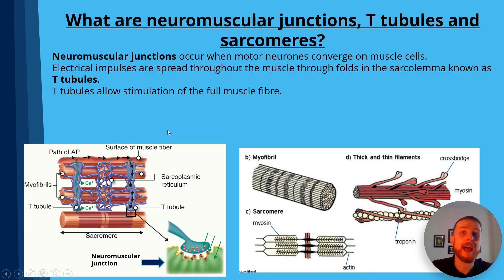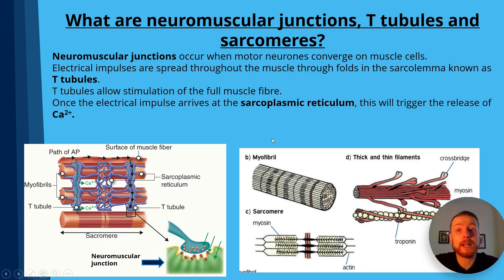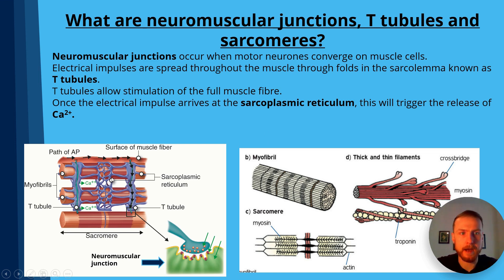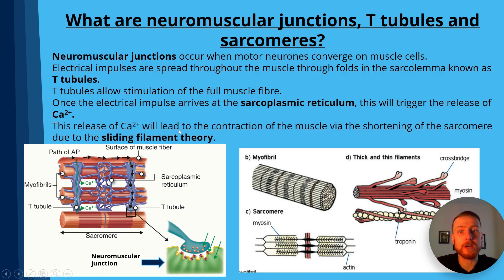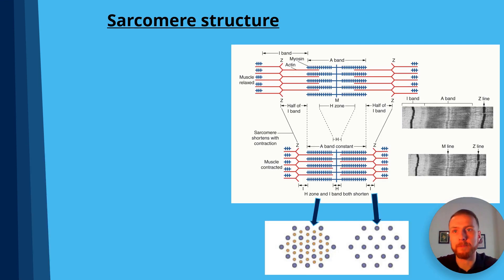T-tubules stimulate the full muscle fibre. Once the electrical impulses have arrived at the sarcoplasmic reticulum — this web-like structure — calcium ions are released. Those calcium ions lead to the contraction of muscle at the sarcomeres, allowing for the sliding filament theory.